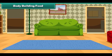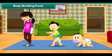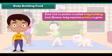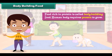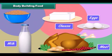Body building food: the human body needs protein rich food to grow. Food rich in protein is called body building food. Milk, eggs, meat, cheese, and gram are examples of body building food.